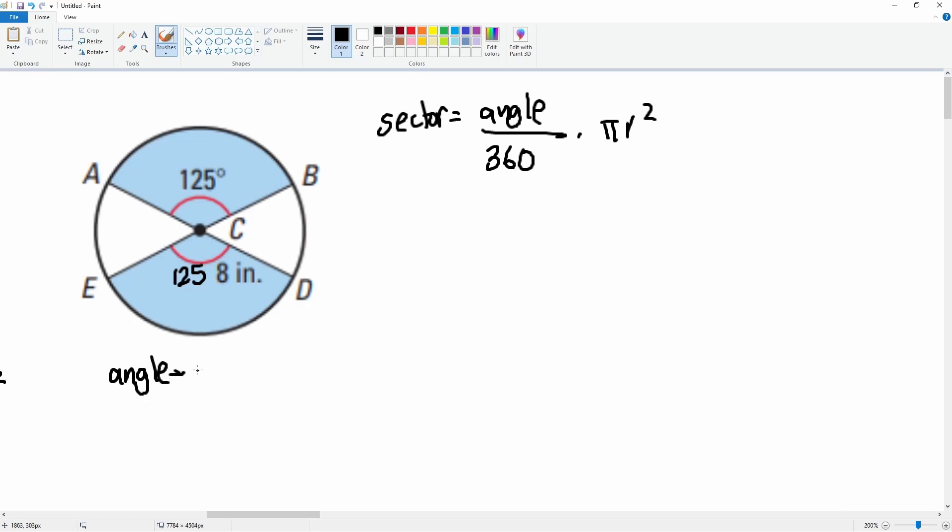And my radius here is 8. So I put 250 divided by 360 times pi r, which is 8 squared. So this is 250 divided by 360 times 64 pi.